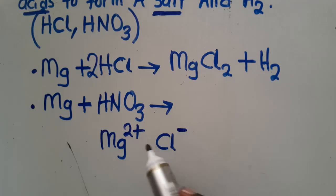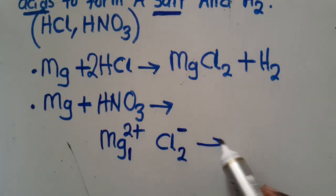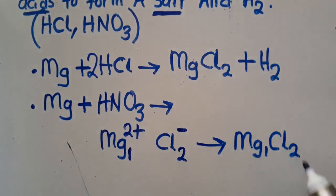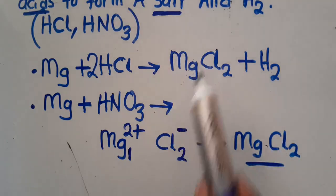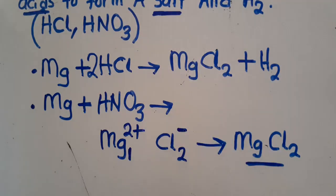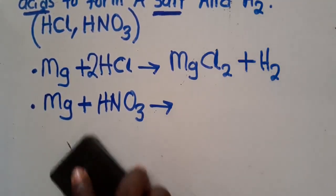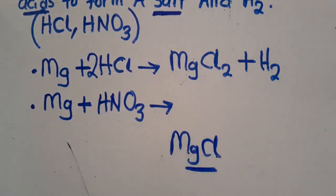These valences are going to interchange. This is called valences — they interchange. The 1 comes here, the 2 goes there. When we combine these we form: Mg with Cl and the 2 subscript. Since there is a 1, we don't show it. This is how the formulas come about — that is magnesium chloride, MgCl₂. This is what you need to understand.